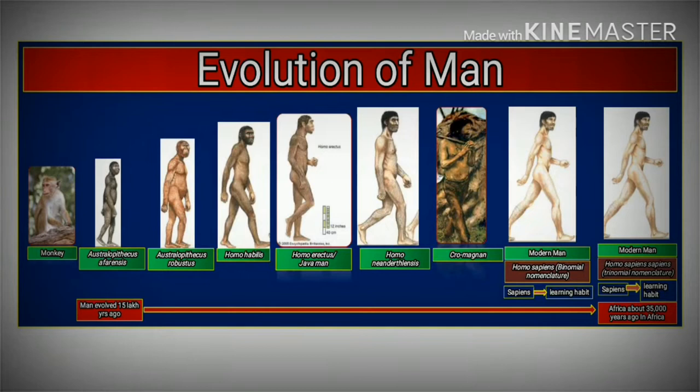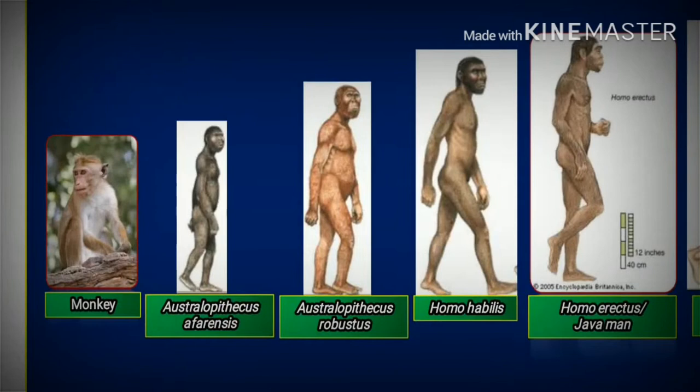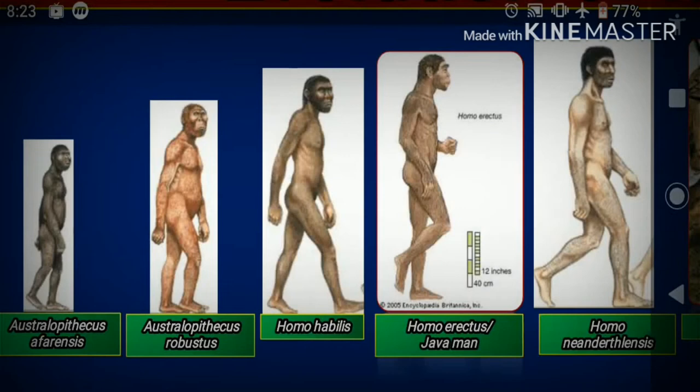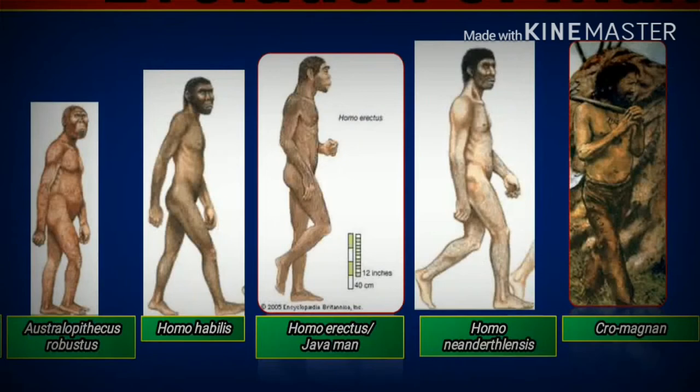First, we will read Evolution of Man. We all know that from Monkey, human being has developed. From Monkey, Australopithecus afarensis has developed. From Australopithecus afarensis, Australopithecus robustus has developed. Then consequently, Homo habilis. Then, Homo erectus or Java Man has developed.